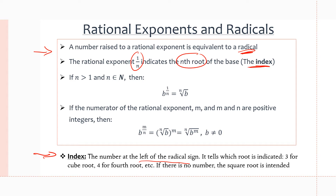For example, if we have a 3, it is a cube root. If we have a 4, it is a fourth root, etc. If there is no number, then the square root is intended. So if we have root of 4, this is a square root — a 2 would be implied but we don't write it. Square root of 4 equals 2. If we want the cube root of 8, we put a 3 on the left side of the radical sign as our index, and that equals 2 as well.